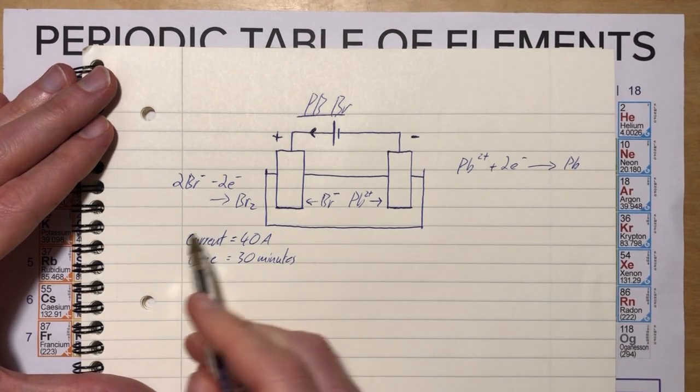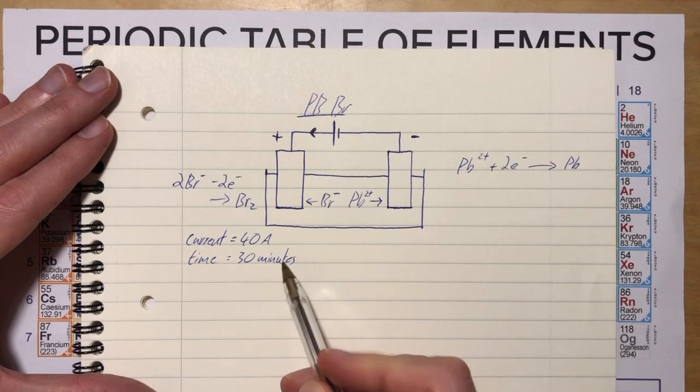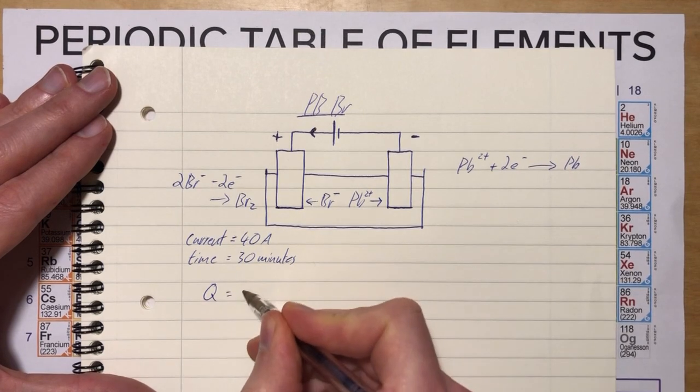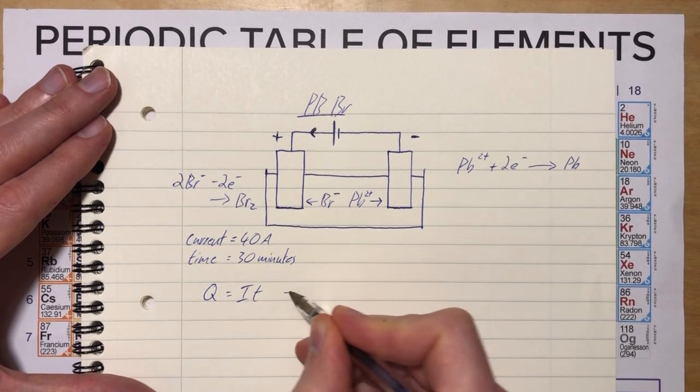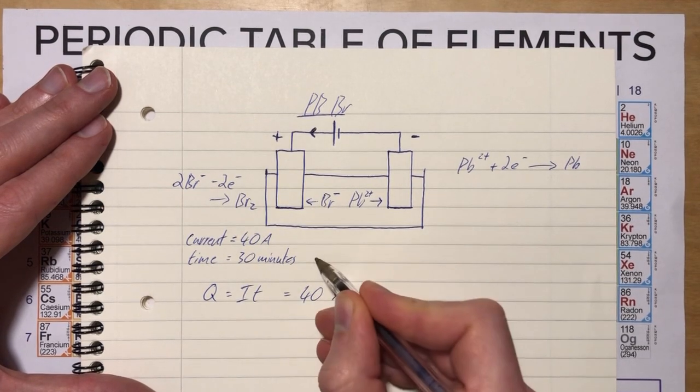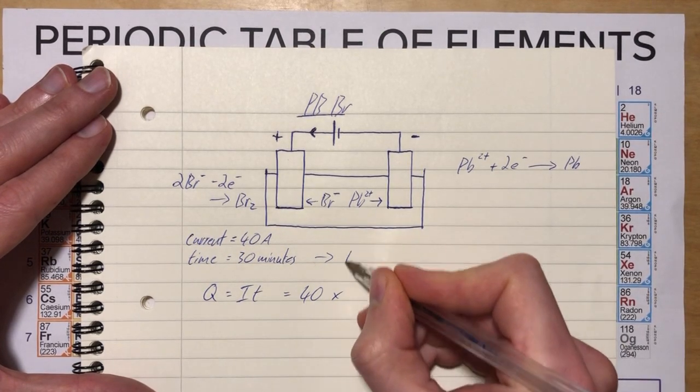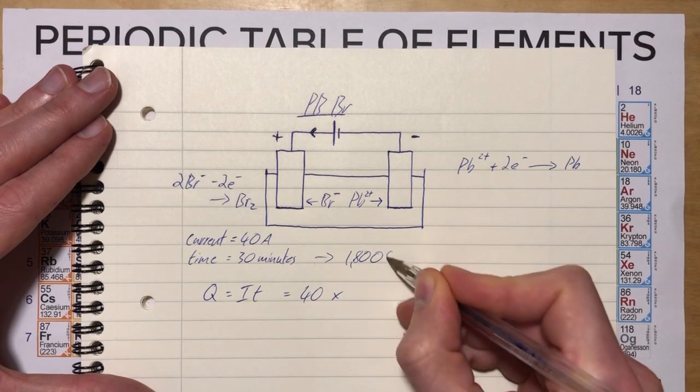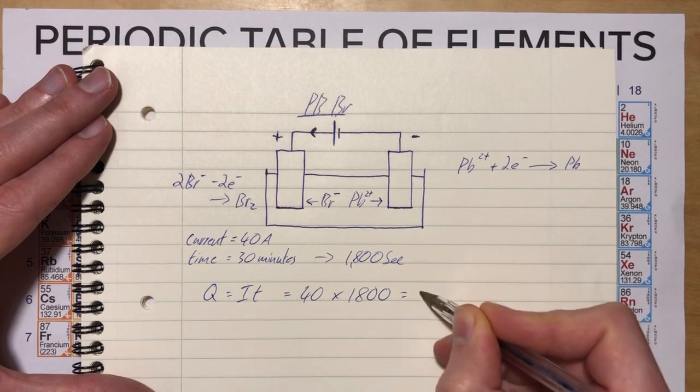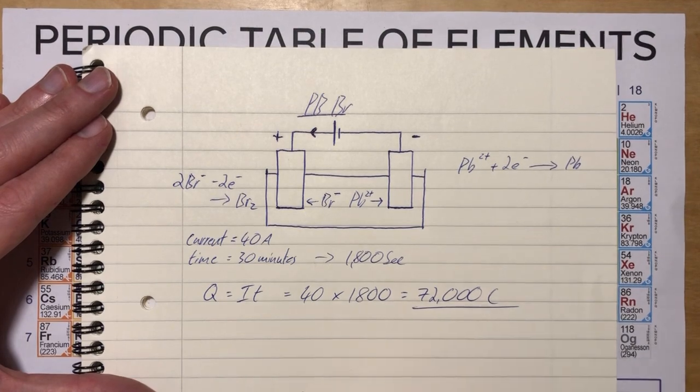Let's come back to these numbers. A current of 40 amps flows for 30 minutes, so the charge transferred is Q = I × t. Converting 30 minutes to seconds: 30 × 60 = 1,800 seconds. So Q = 40 × 1,800 = 72,000 coulombs of charge.